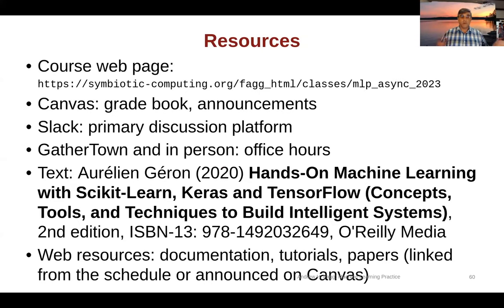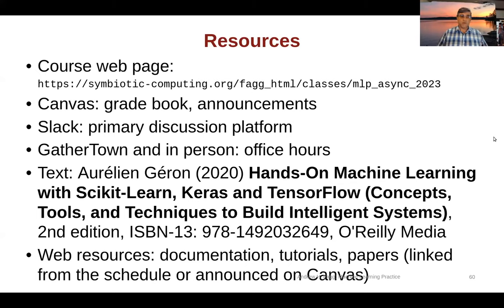As far as resources go, there are lots of different things, all documented on the class website. The main class website is available and linked from the Canvas page. Make sure that you're looking at the asynchronous version of the website, not the live version. On Canvas, we'll be making use of the gradebook as well as posting announcements. For discussions, we're not going to be using Canvas but instead we'll be using Slack. There is an invitation to our Slack page on the Canvas syllabus page, but that invitation will expire within the next week or two, so please get yourself set up now.